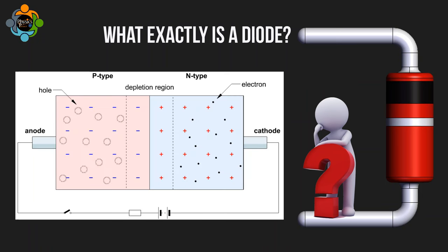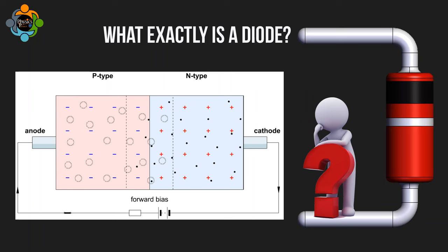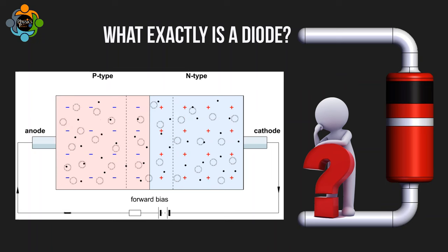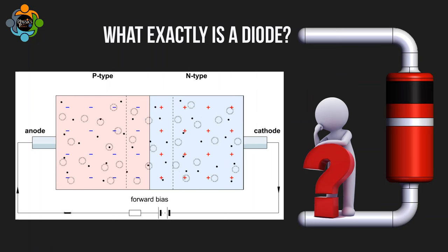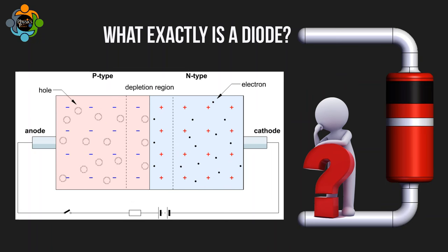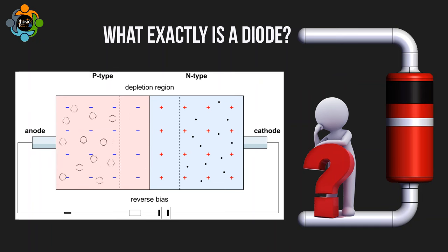Forward bias occurs when a positive terminal of a voltage source is connected to the p-type region and negative terminal to the n-type region of a diode, allowing current to flow through the diode. This reduces the barrier potential at the junction, enabling the diode to conduct electricity easily.